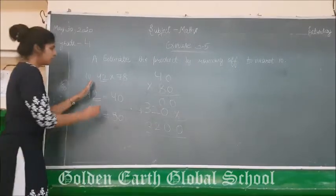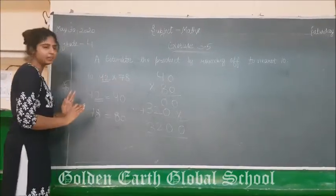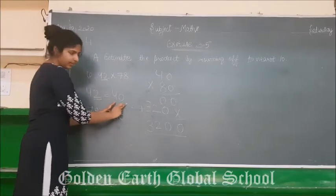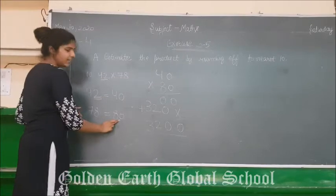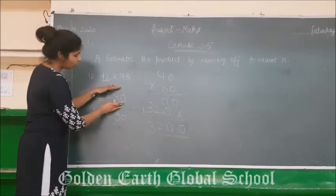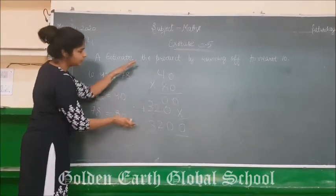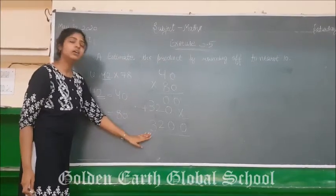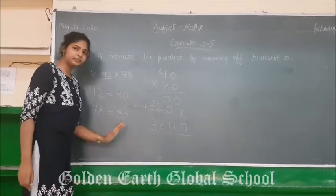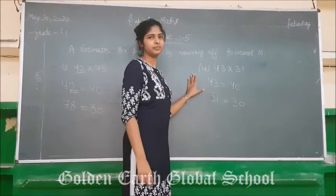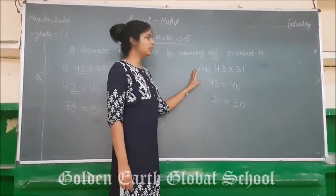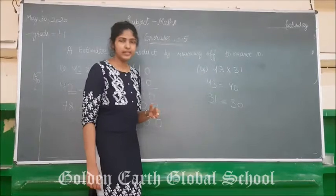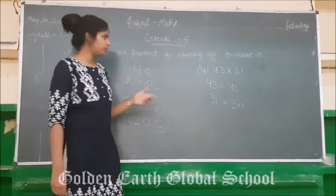To summarize: first, write the number rounded to its nearest 10. The nearest 10 of 42 is 40, and the nearest 10 of 78 is 80. Then multiply those two numbers to get the final result. Clear? Now we will solve the fourth question. Questions 2 and 3, you have to solve by yourself for practice.